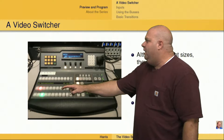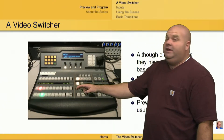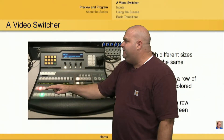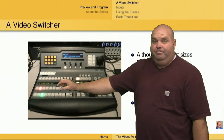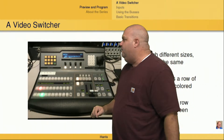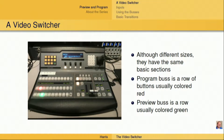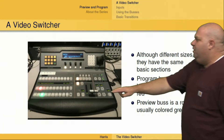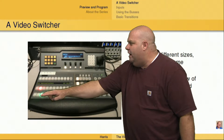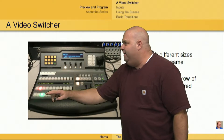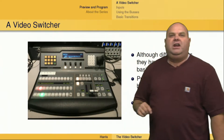which is displayed here. It's generally red. Now this one has red lights, but it may actually just be red buttons themselves, depending on the type of switcher that's been manufactured. That's the program bus. We also have the preview bus, which is going to be a row usually down near the bottom of the switcher, and in this switcher they're colored green.